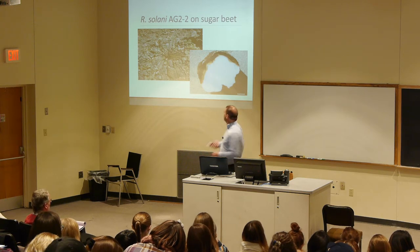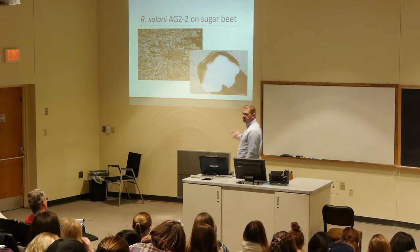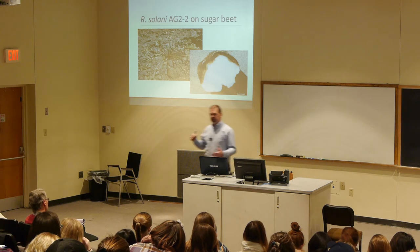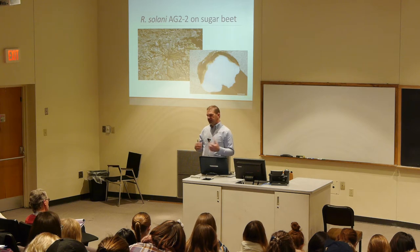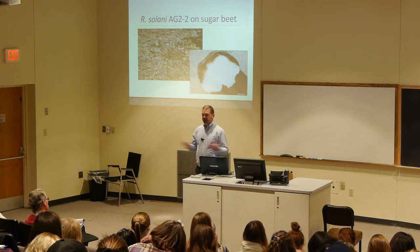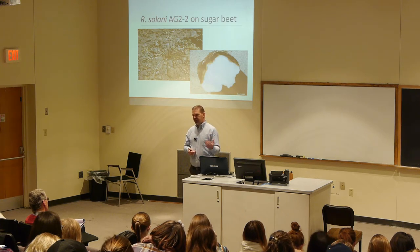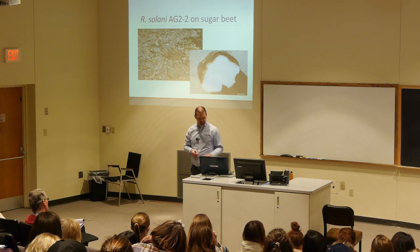Rhizoctonia root rot doesn't penetrate very deep initially — it's shallow, with a well-defined margin between necrotic and healthy tissue. But the tissue shrinks and cracks, allowing the fungus to gain access deeper into the root, eventually rotting the entire root. When we harvest our Rhizoctonia nursery, we get beets that have been completely rotted — we call them dirt clods, just completely dead tissue.